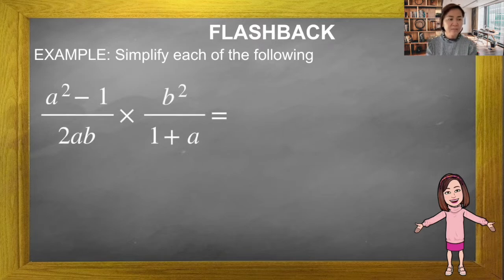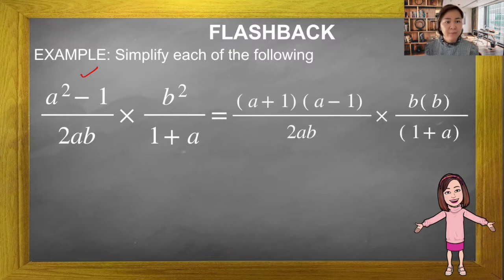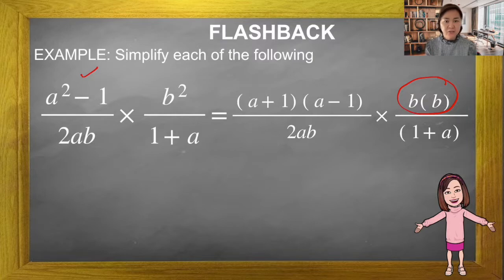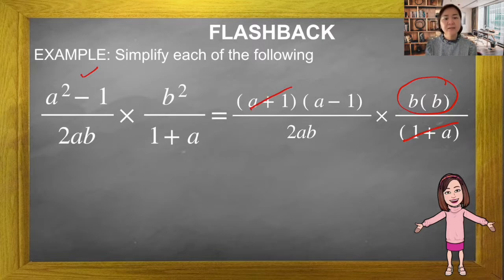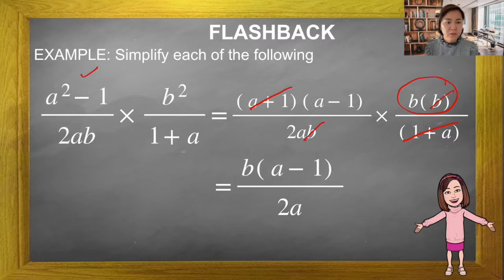Next question: a² minus 1 is in the form of the difference of squares method, so we can factorize it into (a+1)(a-1). I leave the b² separately to make simplification easier. Now (a+1) and (a+1) are the same — one up, one bottom — so we cut it. Then b divided by b is 1. Final answer is b(a-1) over 2a.